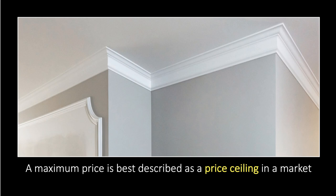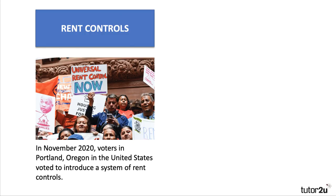So a maximum price is best described as a price ceiling in the market, whereas a minimum price is a price floor. Here are some examples. Even before the pandemic, many reports suggested that a lot of people in the UK are struggling to pay their rent, and something like 4 million people in the UK living in rented accommodation are living below the poverty line.